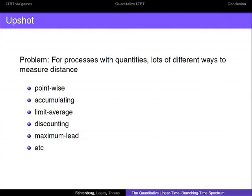The huge problem in this context is that once you start to consider quantities, there is a host of different ways of actually measuring your distances. Depending on your application, you might want to measure pointwise distances in your systems. You might want to accumulate your differences over time if you are considering energy consumption, for example. Once you accumulate, you might want to discount the future, so you can do some discounted accumulating distances, or you can do some limit average stuff. All this has been considered in different papers. You can also do something called maximum lead distance, specifically for timed systems.